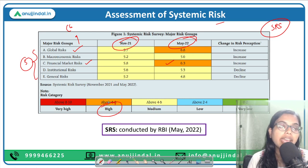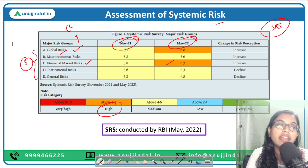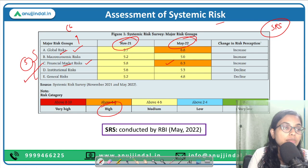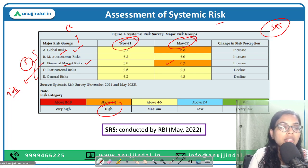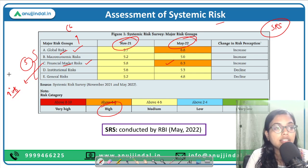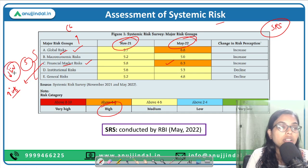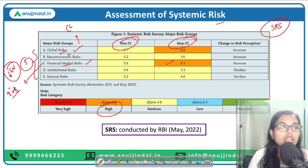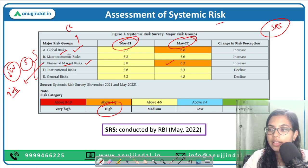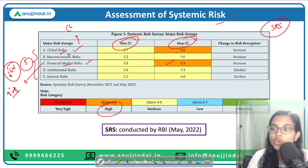Financial market risk has moved from medium to high. The obvious reasons include uncertainties, the ongoing war, increasing crude oil prices, and increasing inflationary pressure. Because of increasing inflationary pressure, several measures are being taken by central banks such as decreasing liquidity in the market. All of these are posing risk, resulting in a high risk category for global as well as financial market risk. The macroeconomic, institutional, and general risks show they are in the medium risk category.